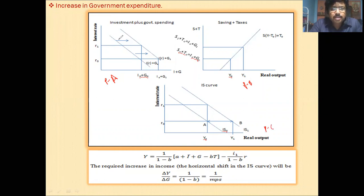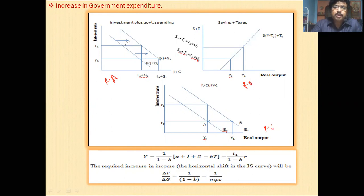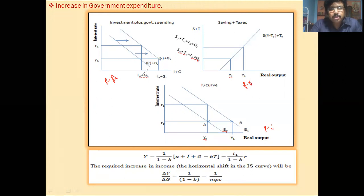This is the IS curve I+G0 — it represents the IS curve. Its name is I+G0. The IS curve represents those combinations of interest rate and investment — investment plus government expenditure — that makes the goods market in equilibrium. So this is the locus of all those points of interest rate and I0+G0 that makes the goods market in equilibrium.